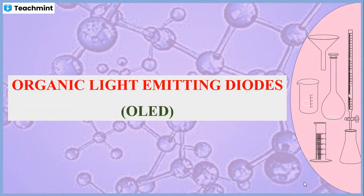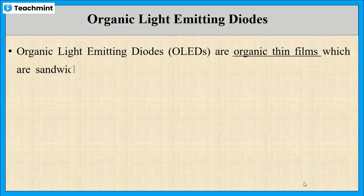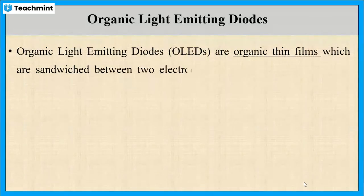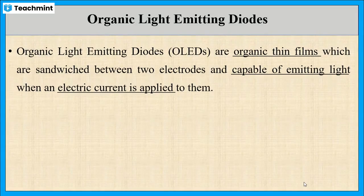In this session, I am going to explain about organic light emitting diodes, that is OLED. These are organic thin films which are sandwiched between two electrodes. By applying an electric field to OLED, it results in the emitting of light.